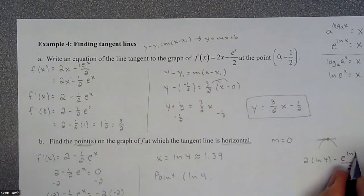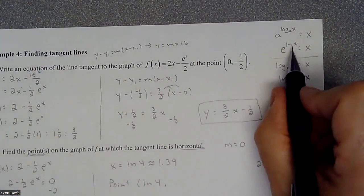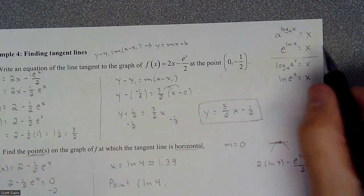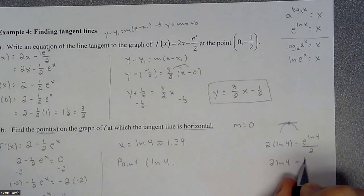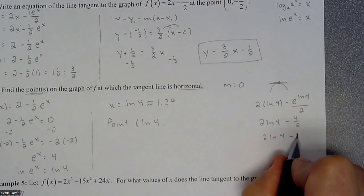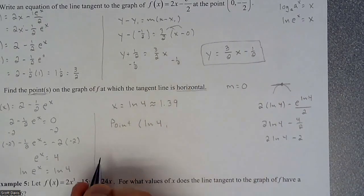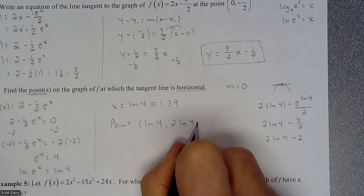So if I do 2 times natural log of 4 minus e natural log of 4 divided by 2. So e to the natural log of 4. So here is where this property comes from. So that is just going to simplify to whatever value is attached to the natural log. So that's just going to become 4. So we're looking at 2 natural log of 4 minus 4 over 2, which is 2 natural log of 4 minus 2. So as an exact value, the x value is the natural log of 4. The y value is 2 natural log of 4 minus 2.